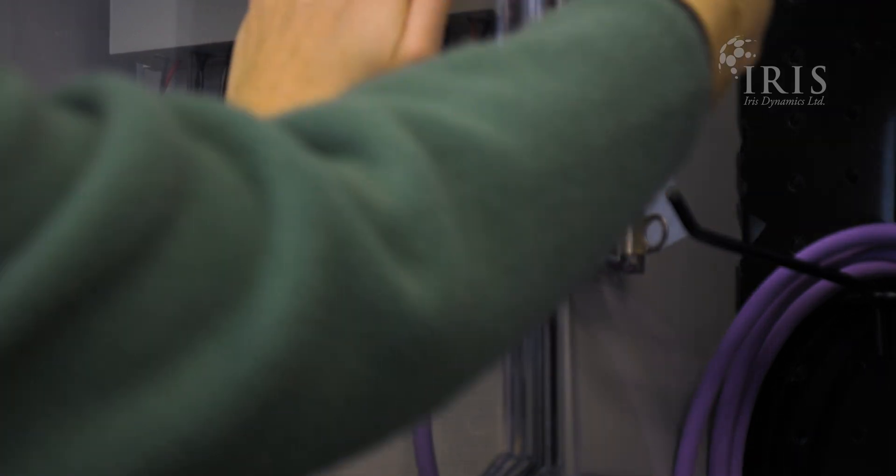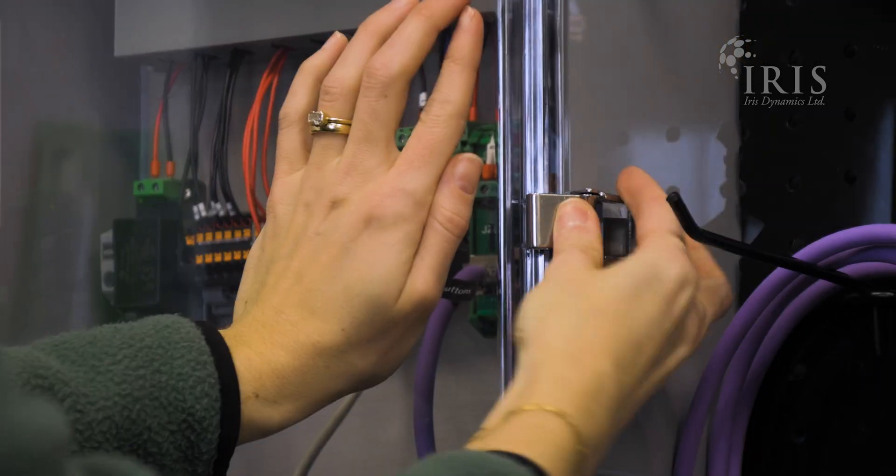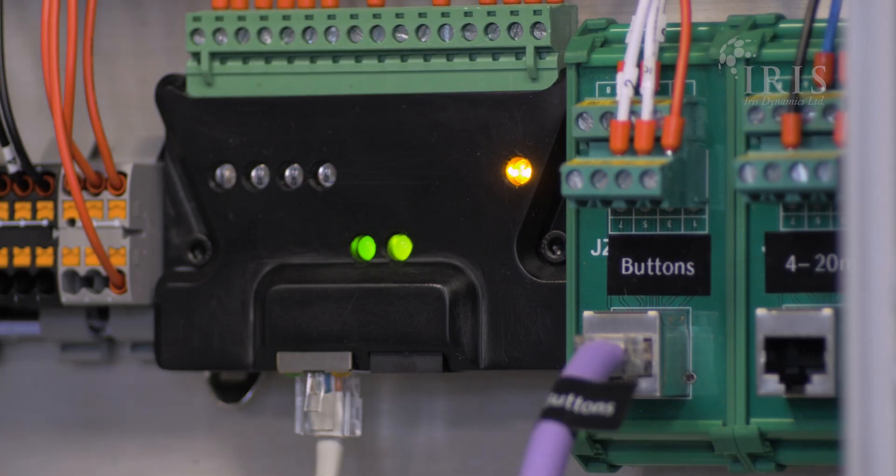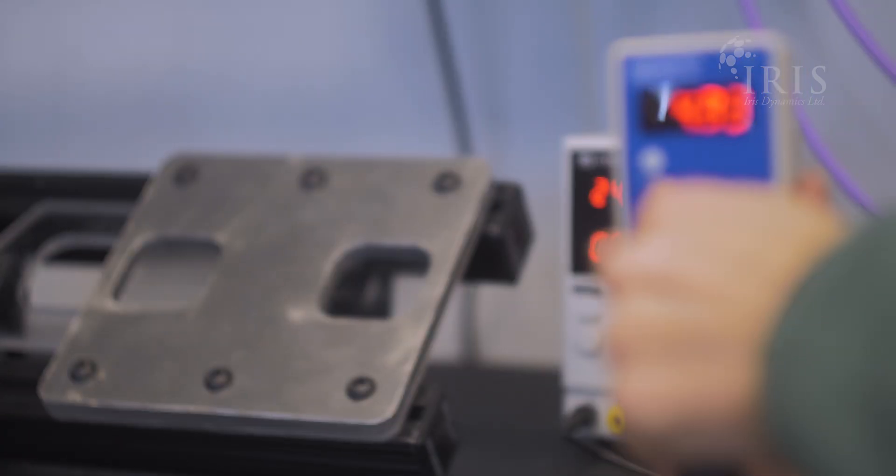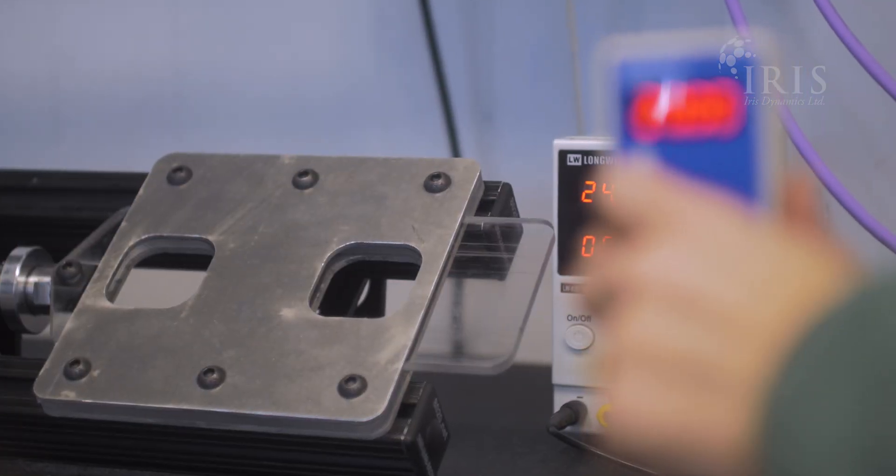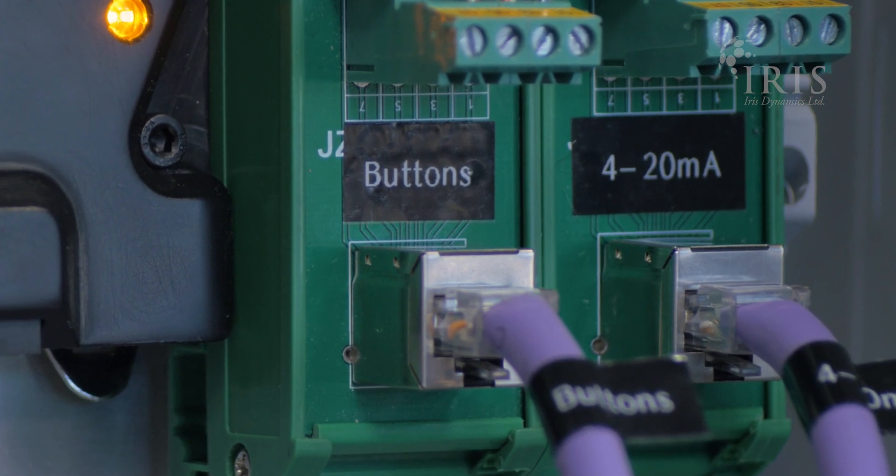The digital inputs can be used to trigger pre-configured motions, or the 4-20mA analog inputs can be used to directly control position and force. Real time position and force data from the motor is continuously fed back to the dual 4-20mA analog outputs.